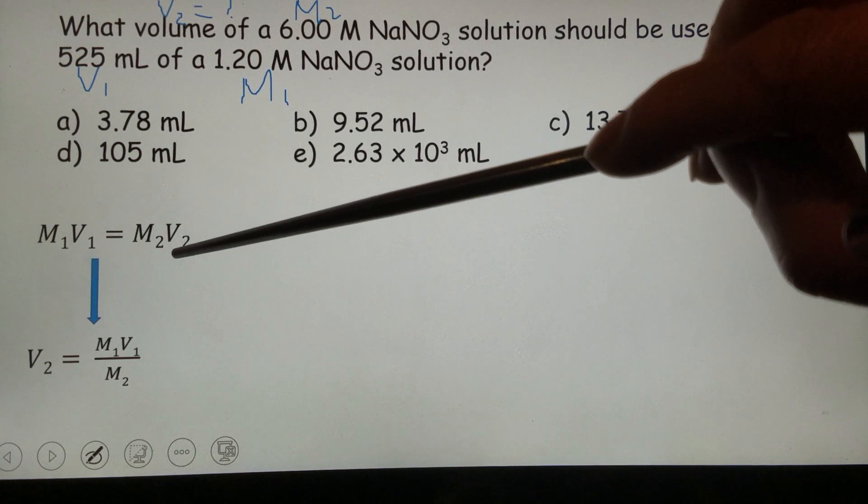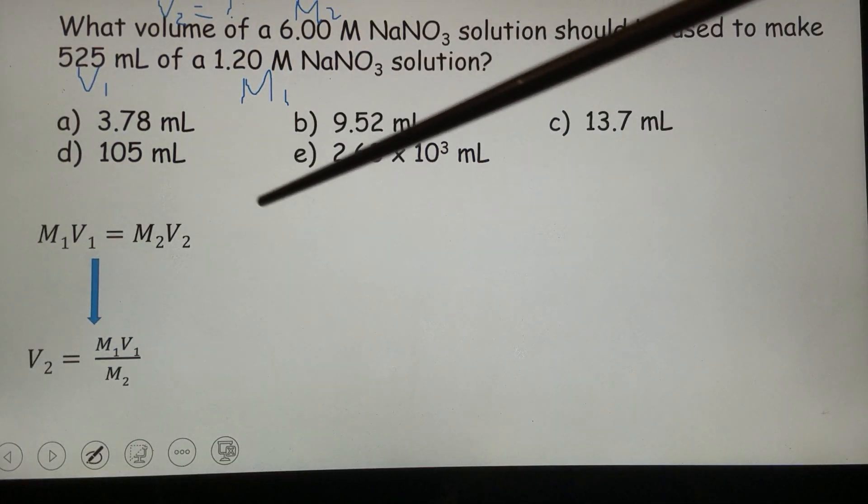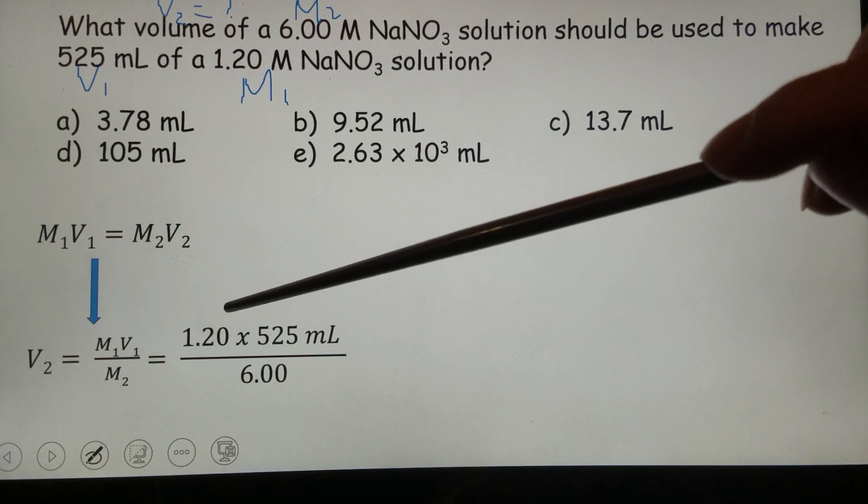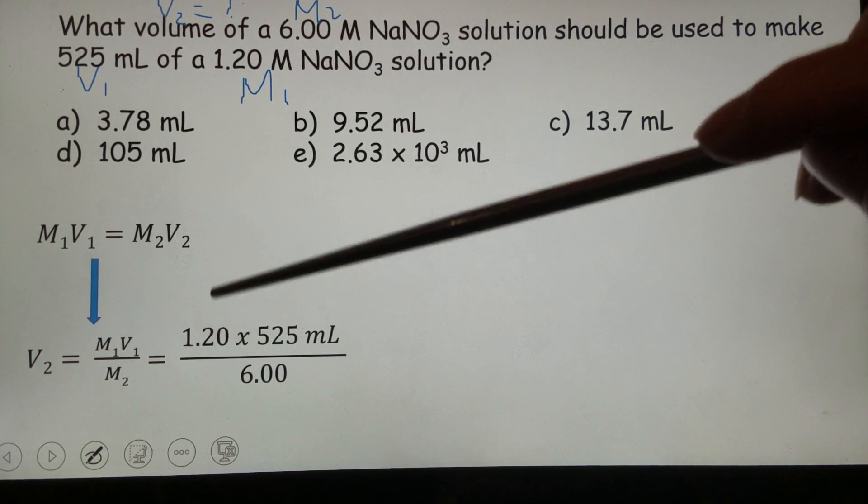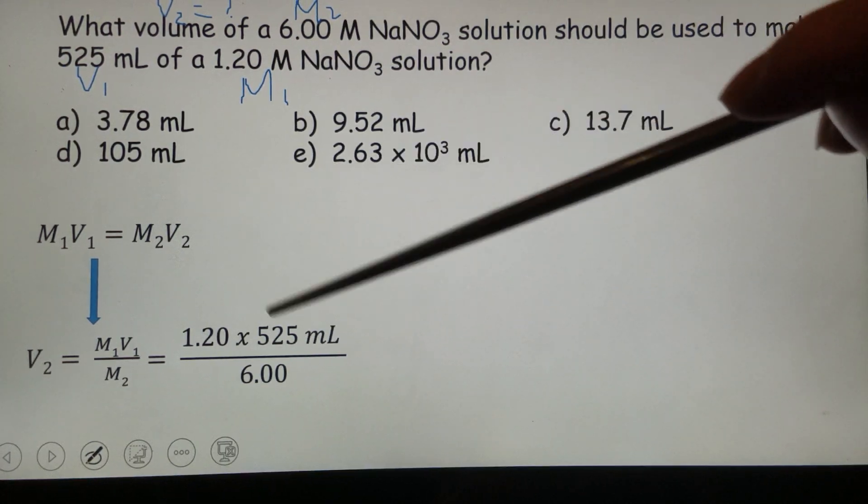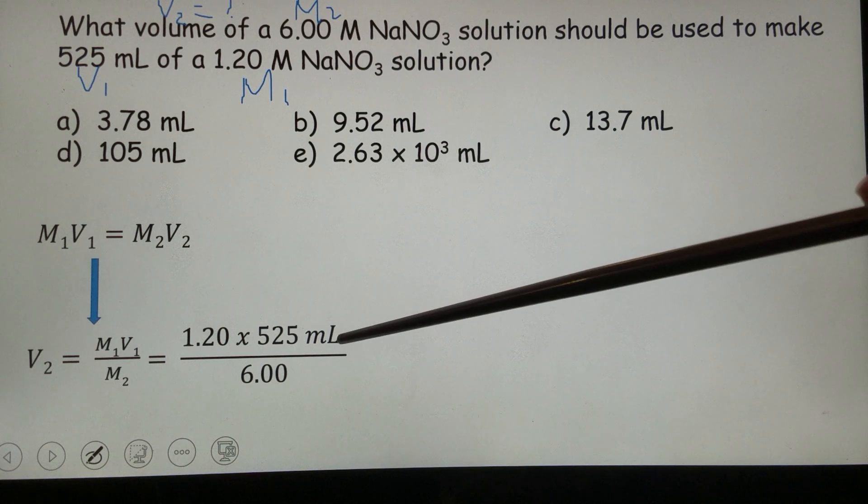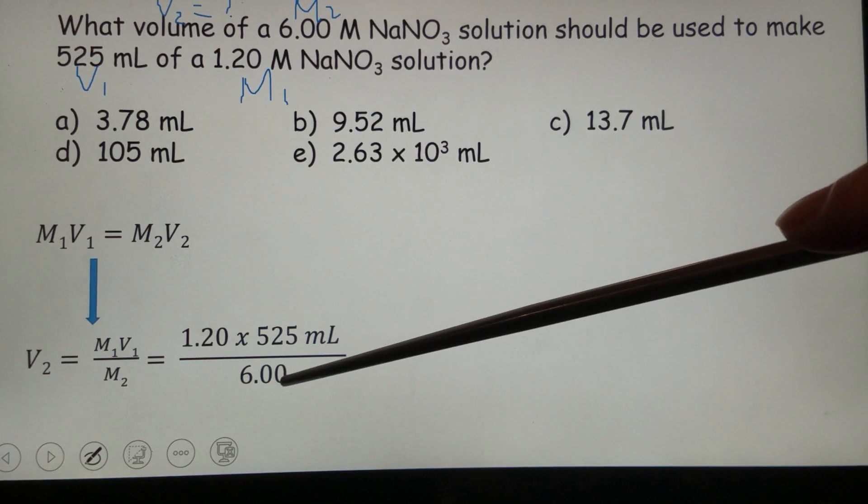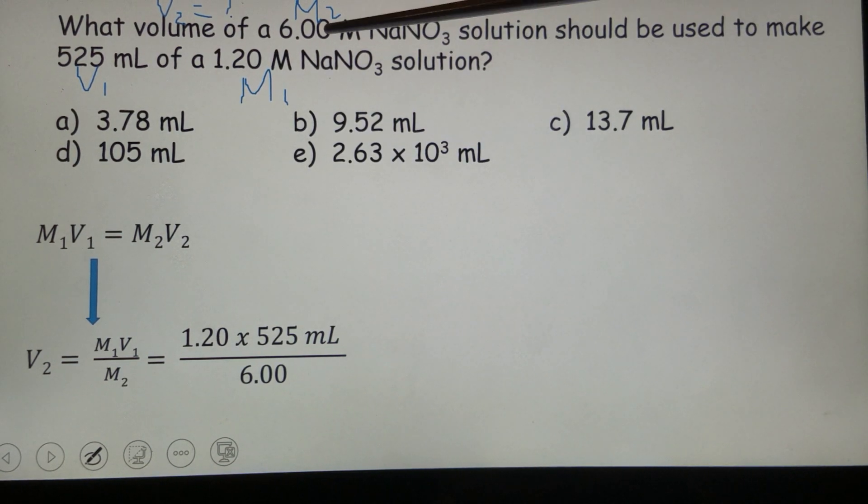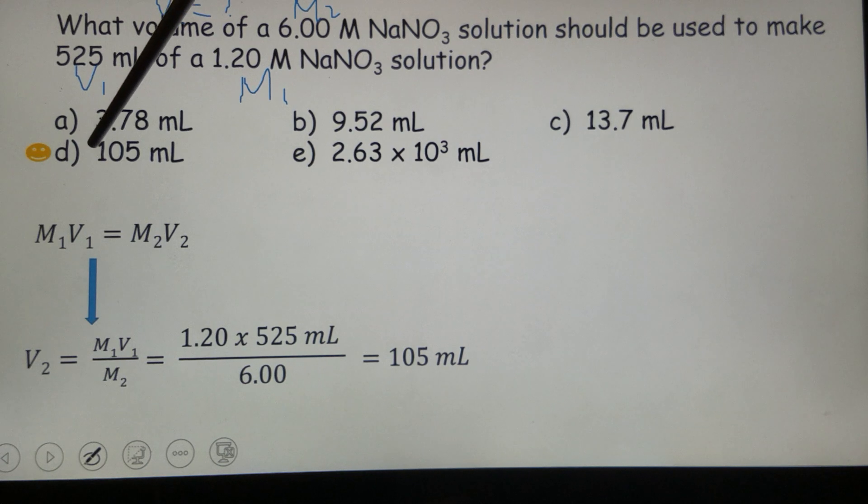We simply move M2 to the other side as a denominator and then we know M1 1.2 molar and then V1 525 milliliters divided by 6 molar which is M2 and then we have 105 milliliters. D obviously is the correct answer.